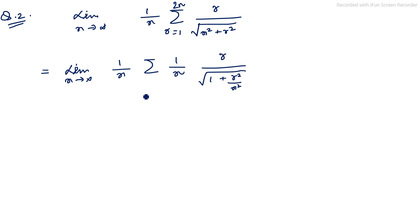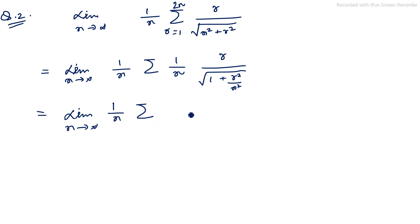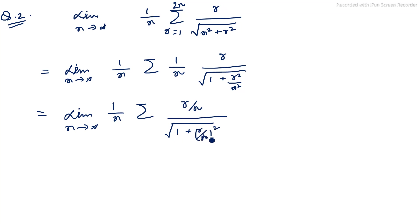So the series becomes limit n tends to infinity of (1/n) × summation of (r/n) / √(1 + (r/n)²), and r equals 1 to 2n.